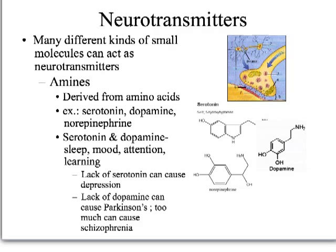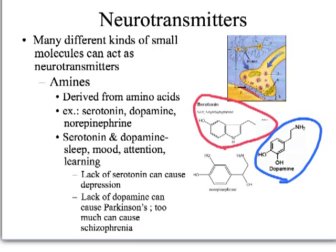There are different kinds of small molecules that can act as neurotransmitters. Amines are one type — derived from amino acids, so they have nitrogen-based characteristics. Examples of amine-type neurotransmitters are serotonin, dopamine, and norepinephrine. The thing they all share is the amine group — anything with a nitrogen in it. They all share at least a nitrogen somewhere in their chemical structure.